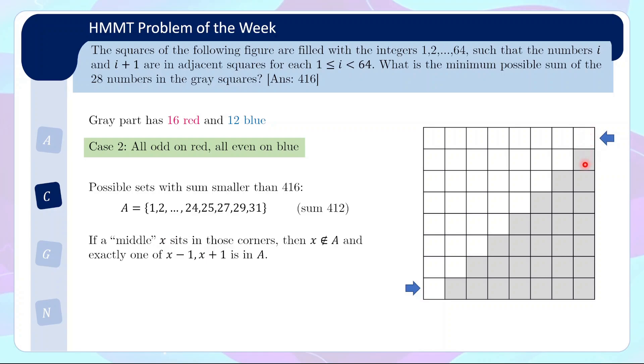Now if a middle number, by middle I mean not 1 or 64, which means that if you fill up all the numbers in the chain, the number will be in between. So it must have something before that and something after that. So if a middle number sits at those corners, you must either enter from here and exit here, or you enter from the left and exit below. So in either case, it's very limited the way the path passes the corners. So if a middle number sits here, it must be a number x that doesn't belong to the set A. And exactly one of x-1 or x+1 is in the set A.